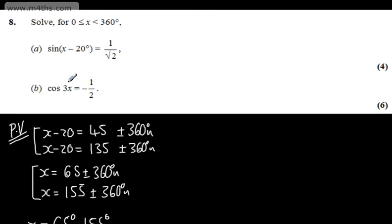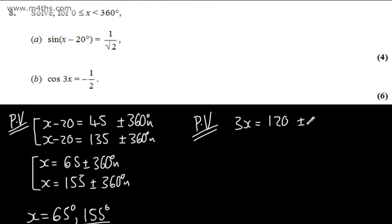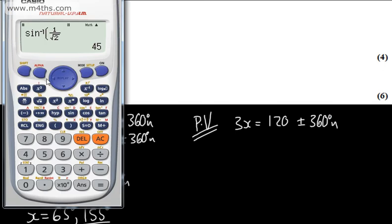In part B, for 6 marks, we need to solve cos(3x) equals negative one half, where x is between 0 and 360 degrees. Taking the inverse cosine of negative one half gives us one of our special angles. So 3x equals the inverse cosine of negative one half. If you're unsure, do inverse cosine of negative 0.5 in degrees mode, and we get 120 degrees.